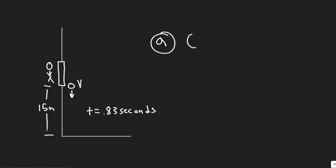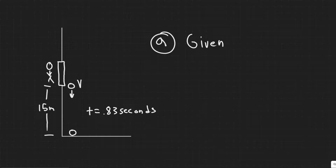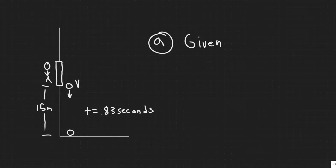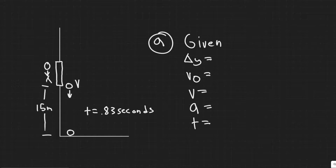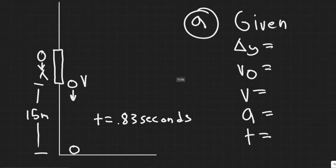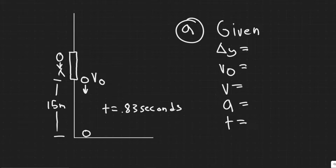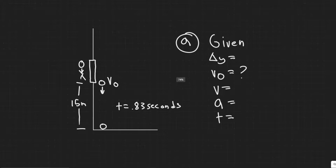We'll use a kinematics equation. I always start by writing my given values and choosing my interval. In this case, the interval is from the window all the way down to the sidewalk. I write out all the kinematic variables along the y-axis: delta y (change in position), initial velocity v₀, final velocity v, acceleration a, and time t. We're trying to find the velocity as it passes the window, which is the initial velocity v₀ for this interval.